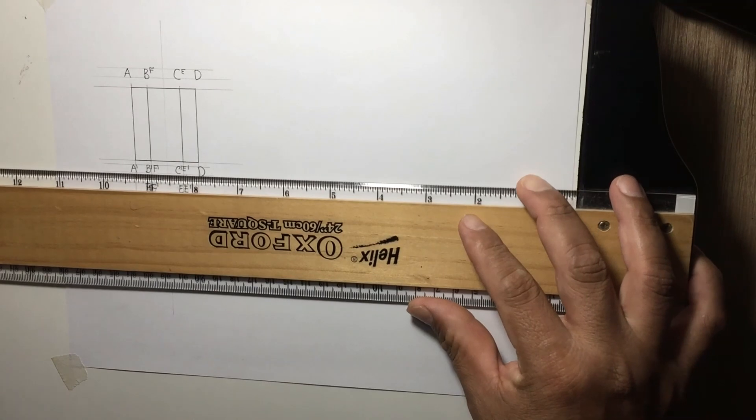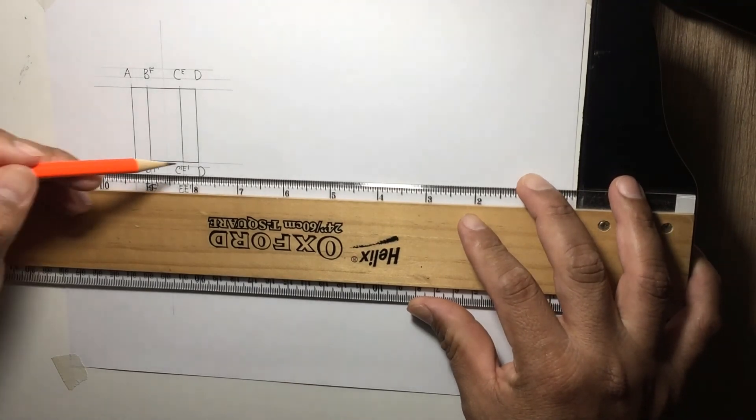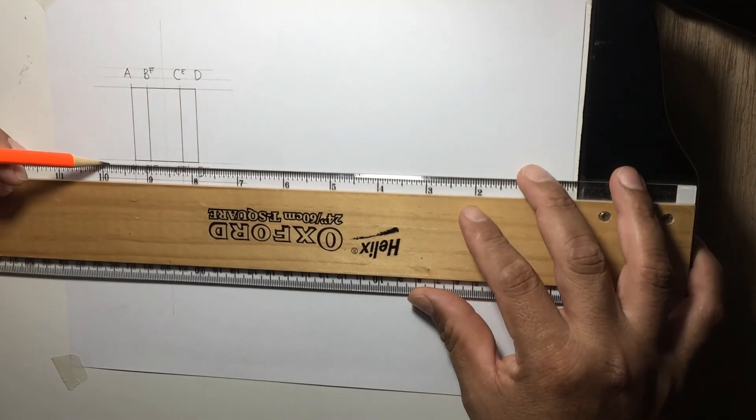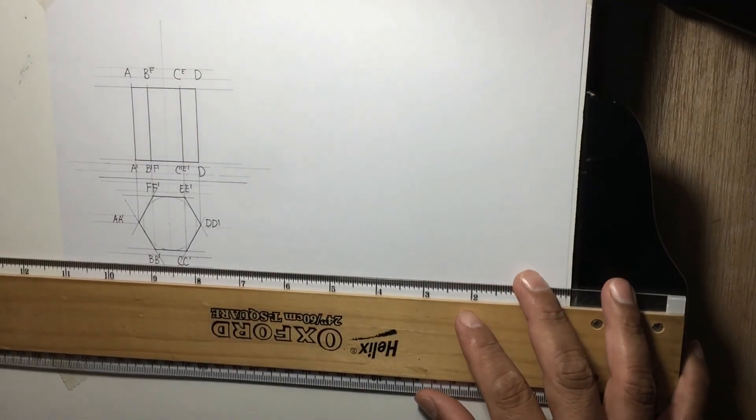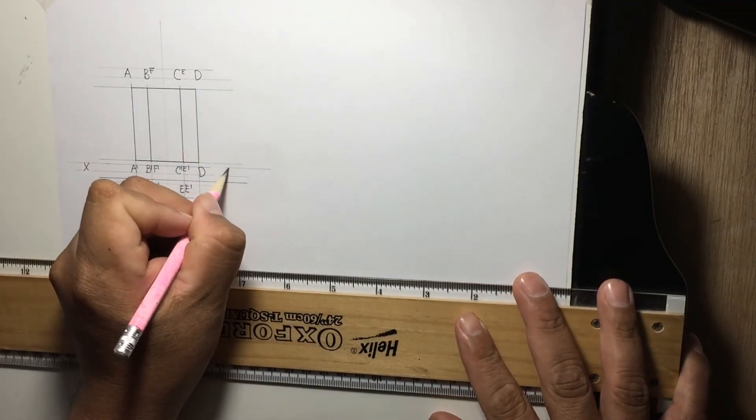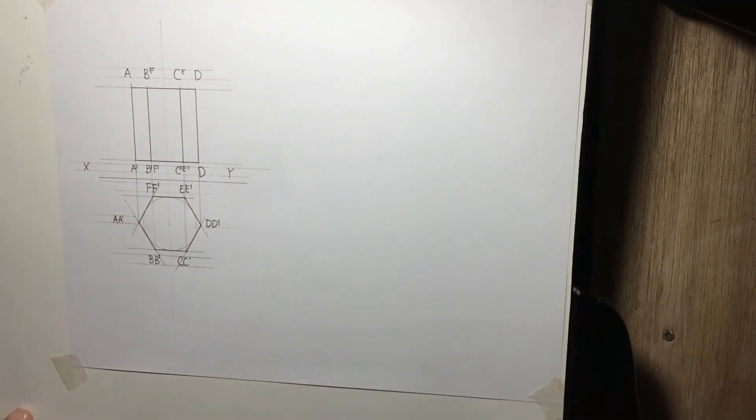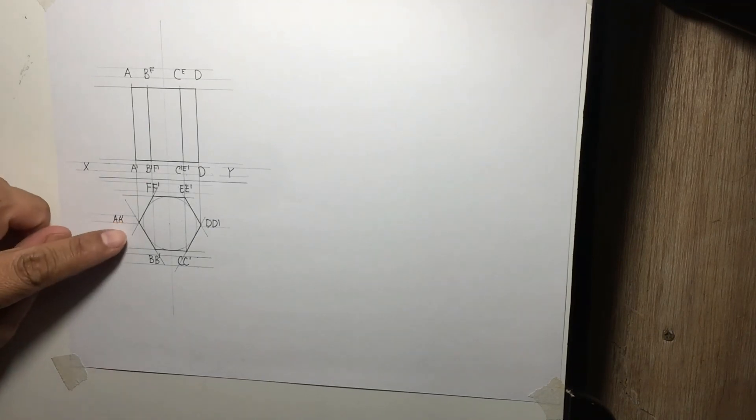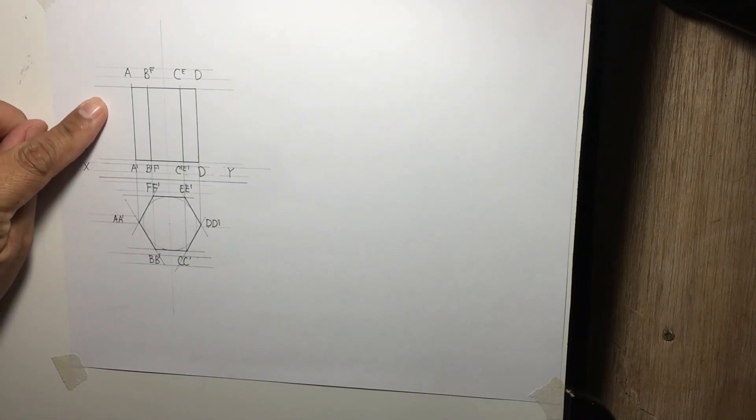I can use the same line to get X and Y, X and Y axis. So we have plan and the front elevation.